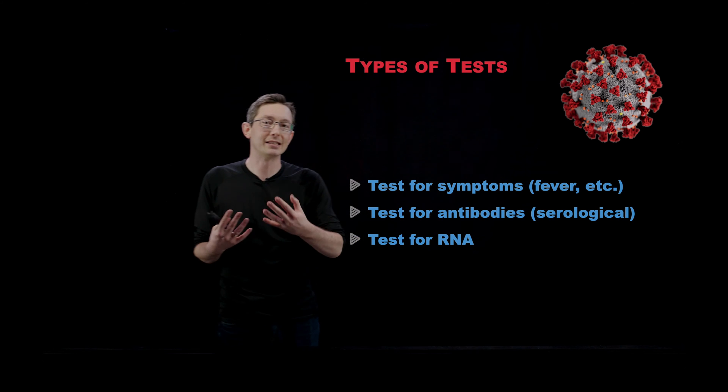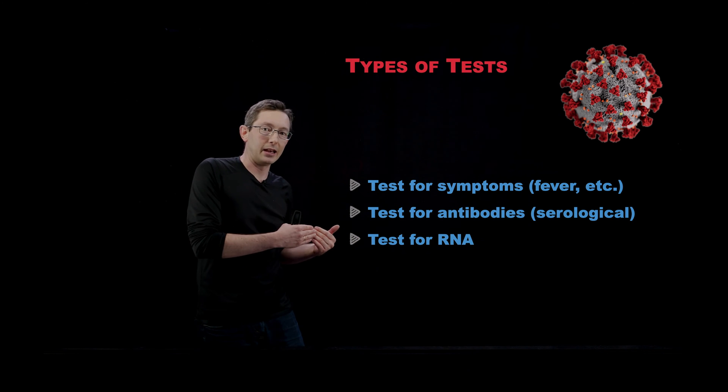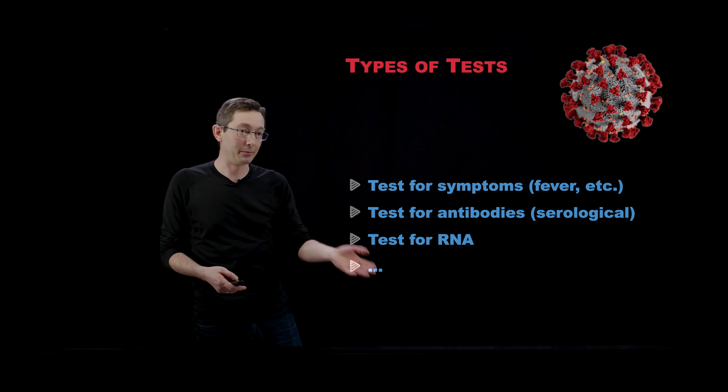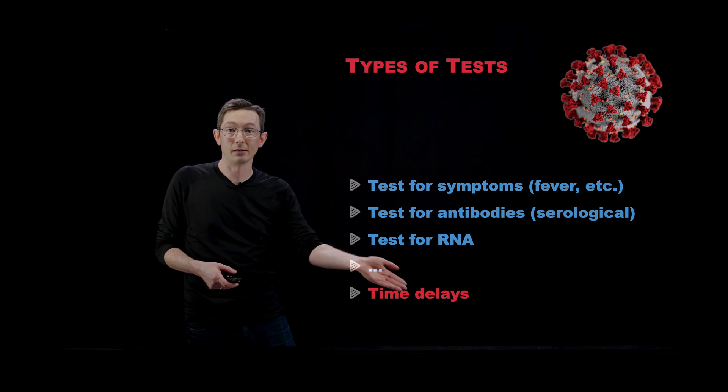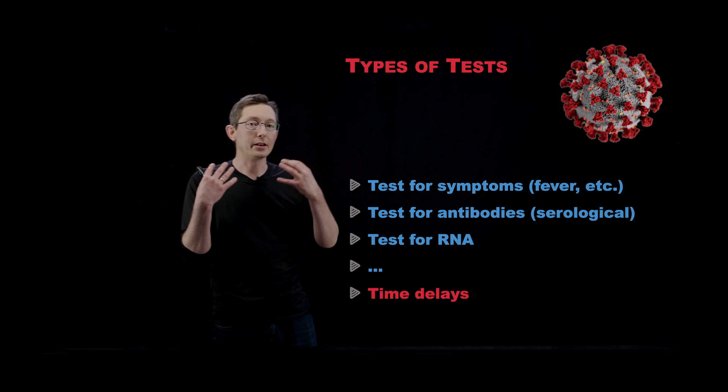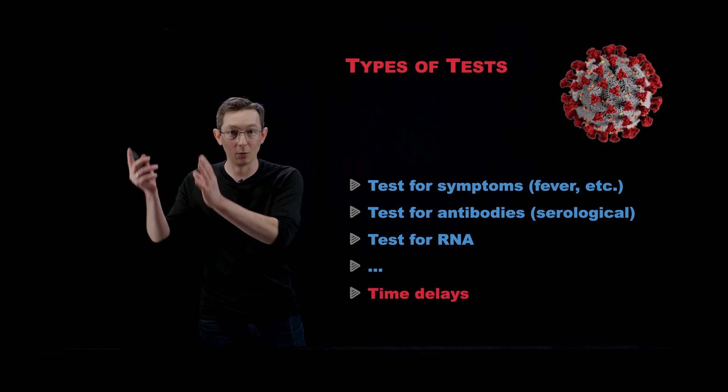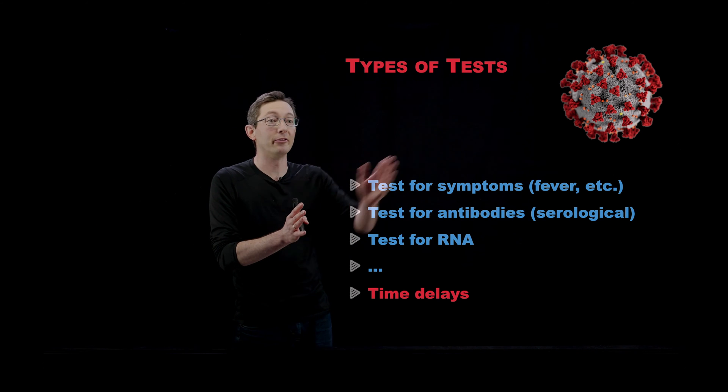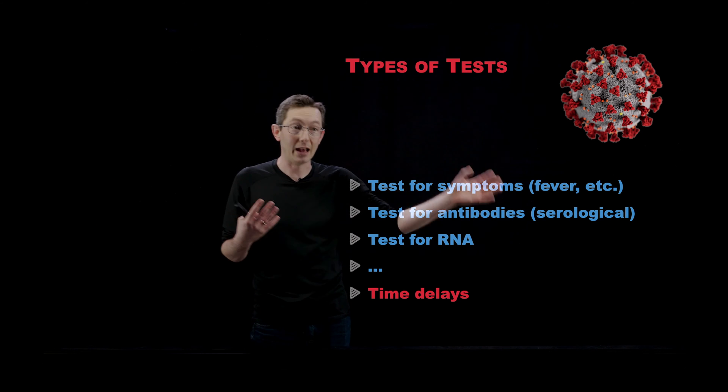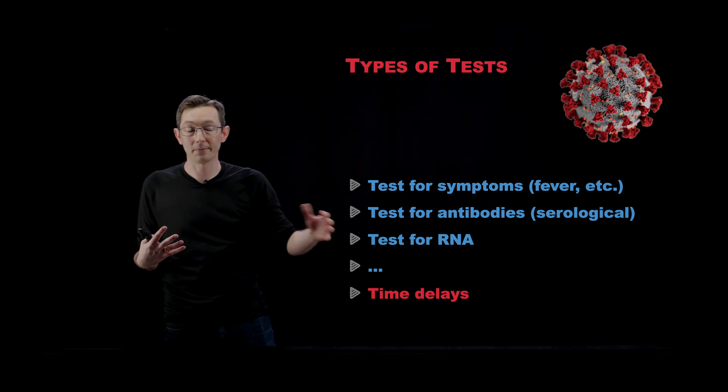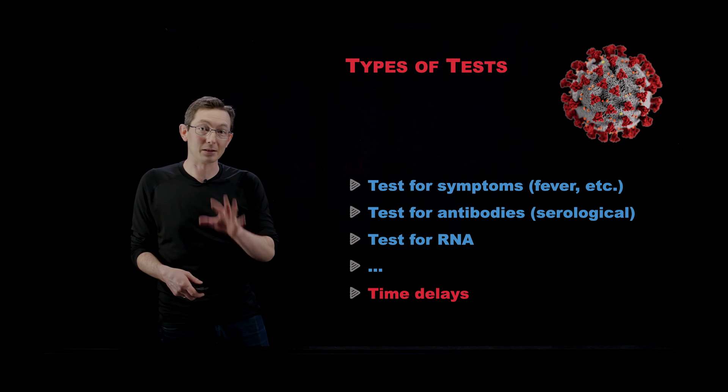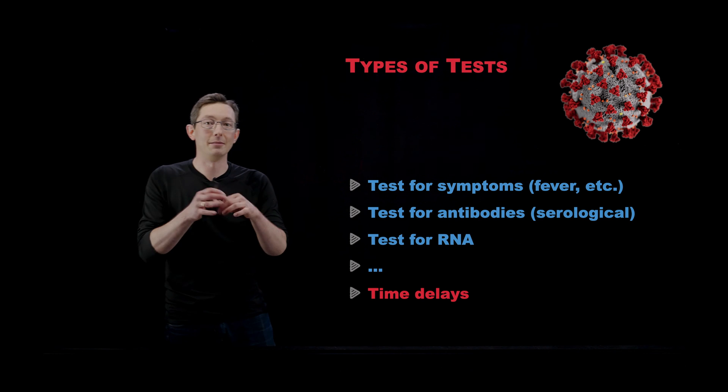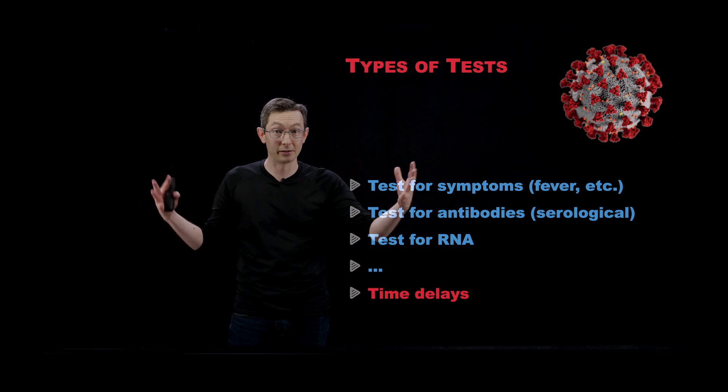Implicit in all of this, there is a bigger time delay. Time delays are a big problem here. There is a time delay of incubation. So when you catch the virus, there is some period before you express symptoms and antibodies and so on. Those time delays make this a really hard sensing problem and it motivates having a larger sensor network.